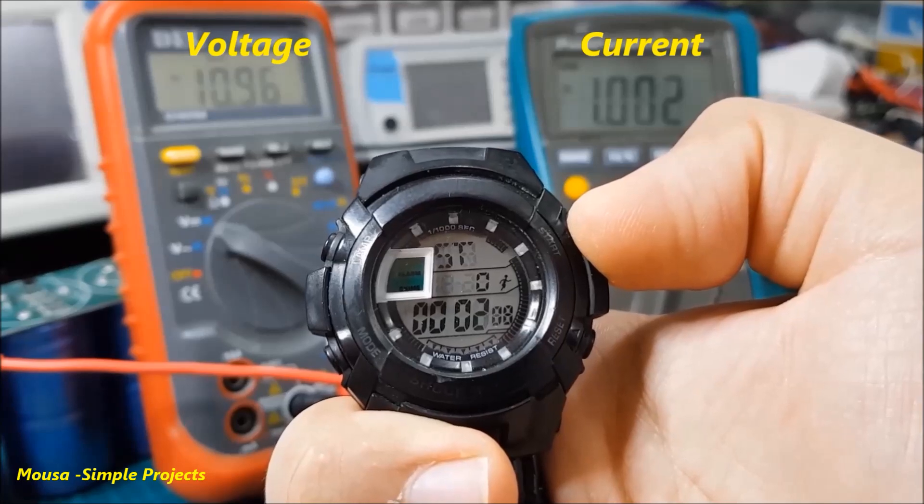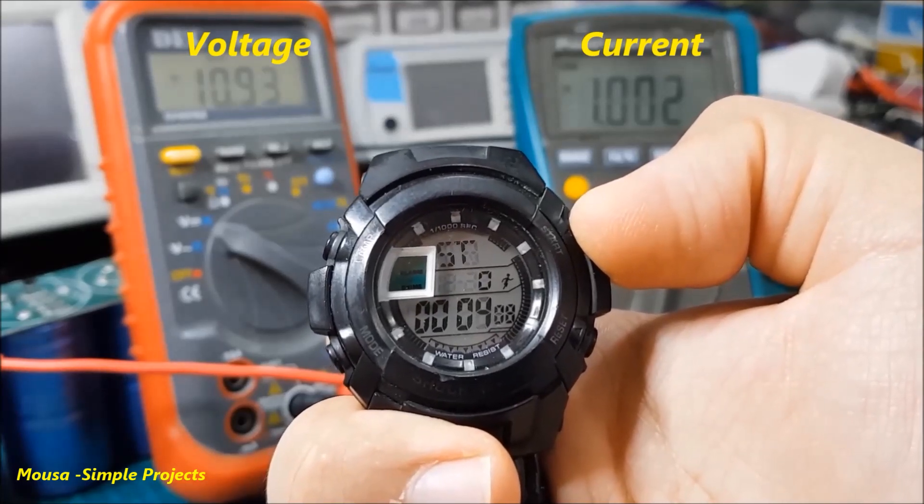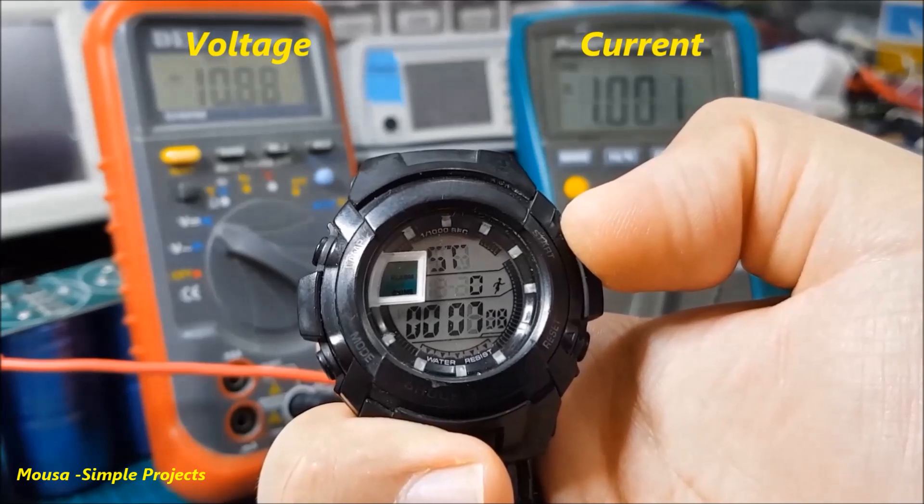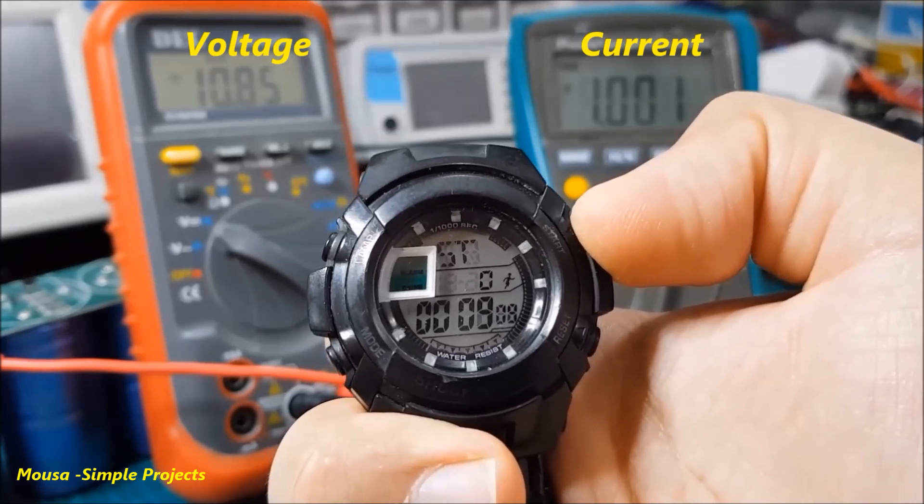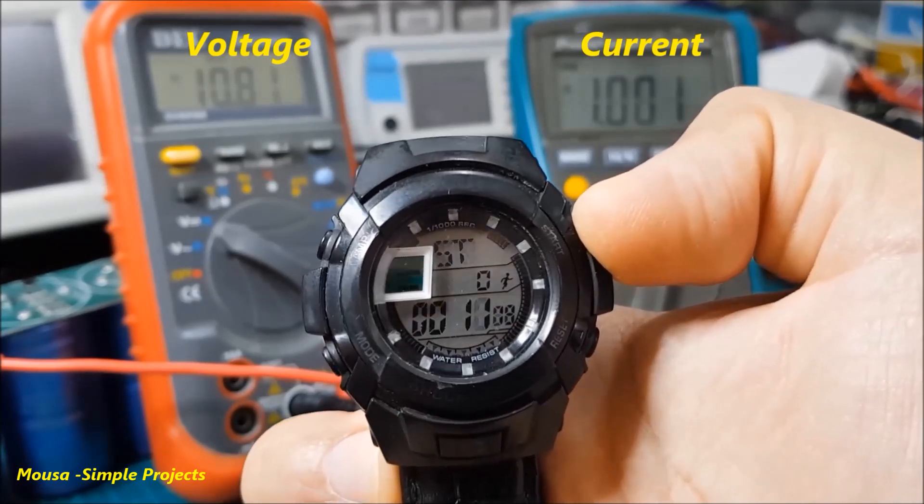I discharge this super capacitor bank from 11 volts to 10 volts by one amp constant current to see how long it takes for the voltage to drop by one volt.